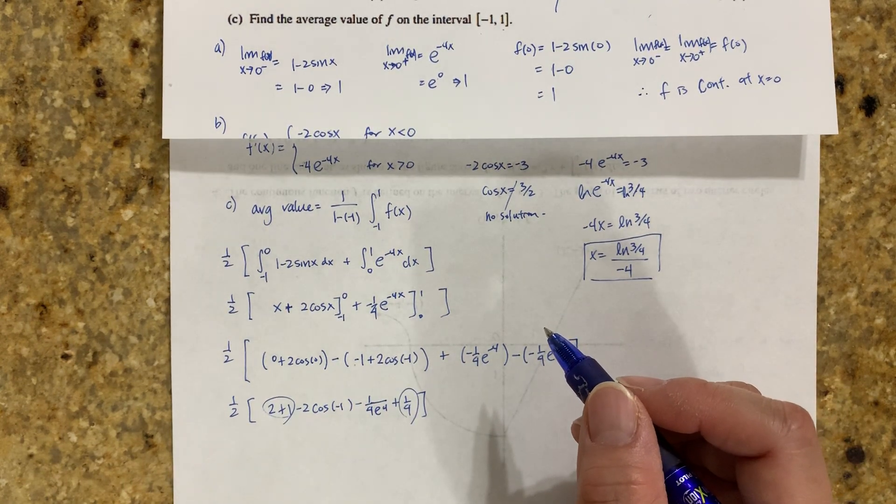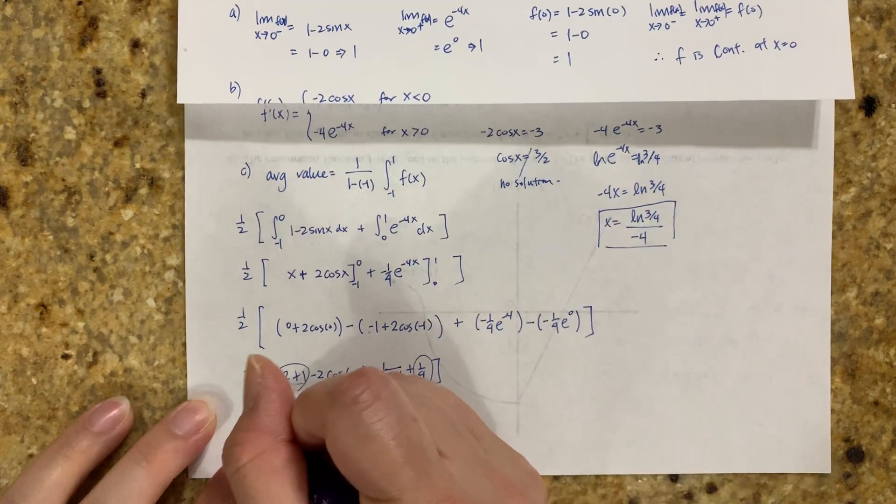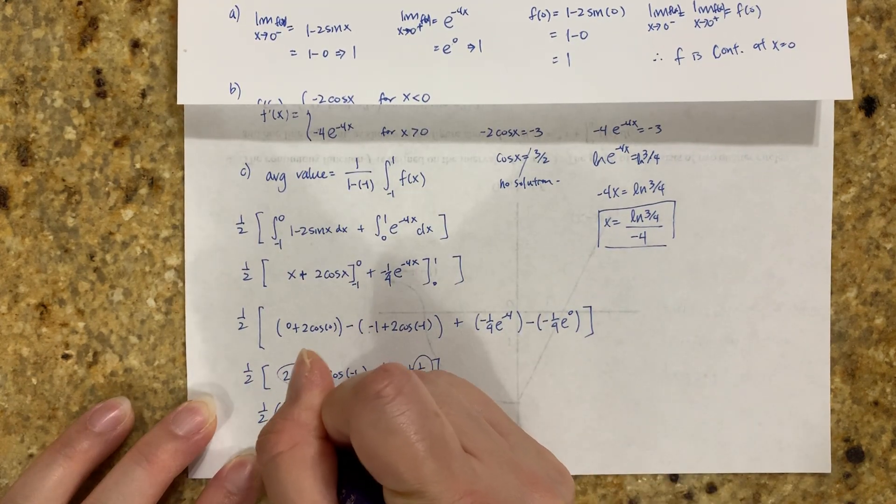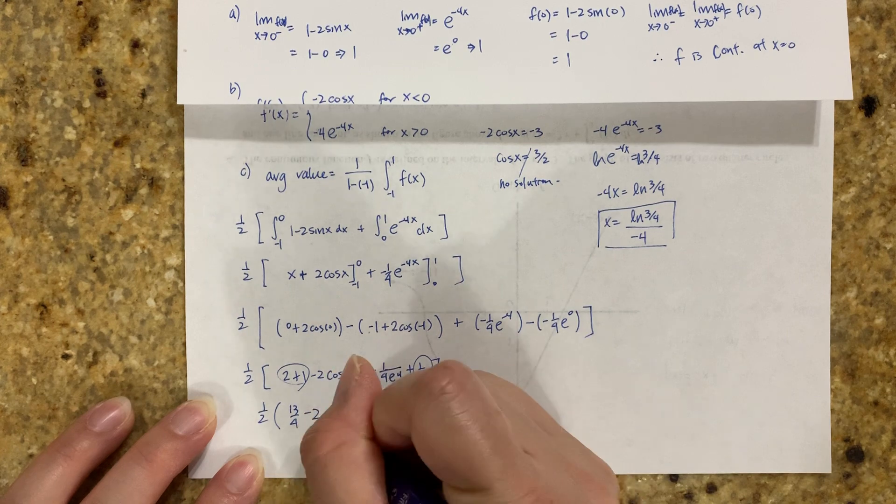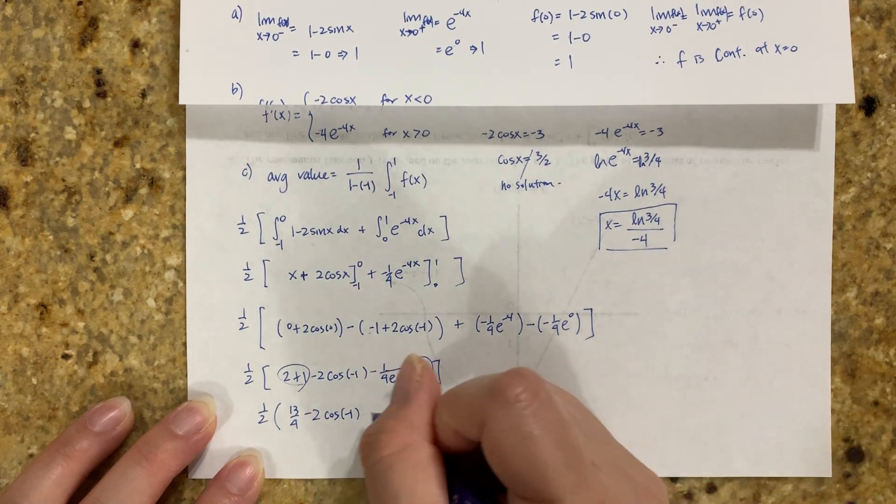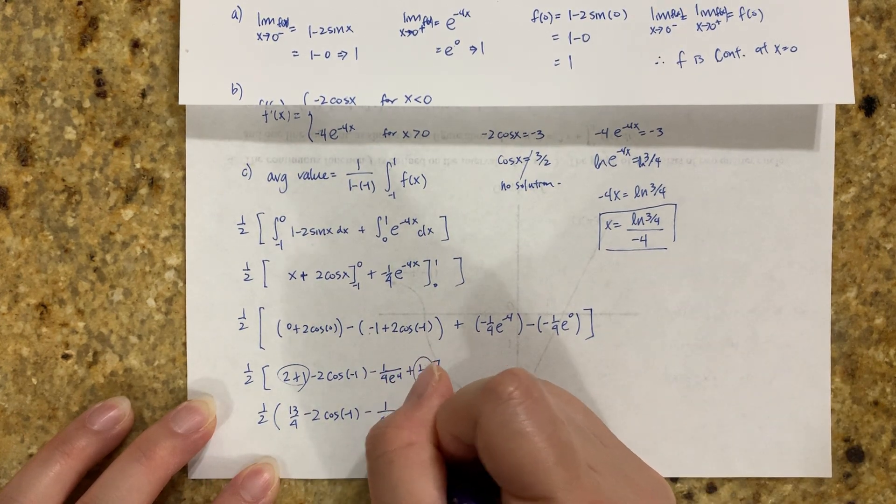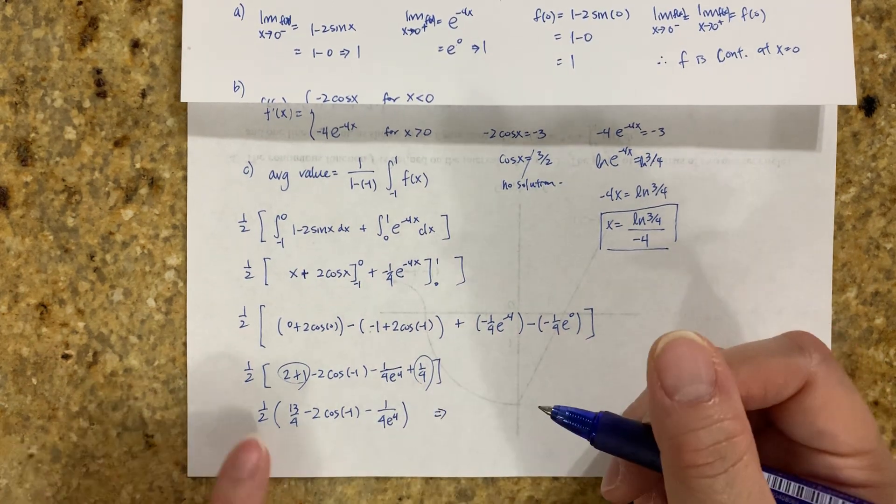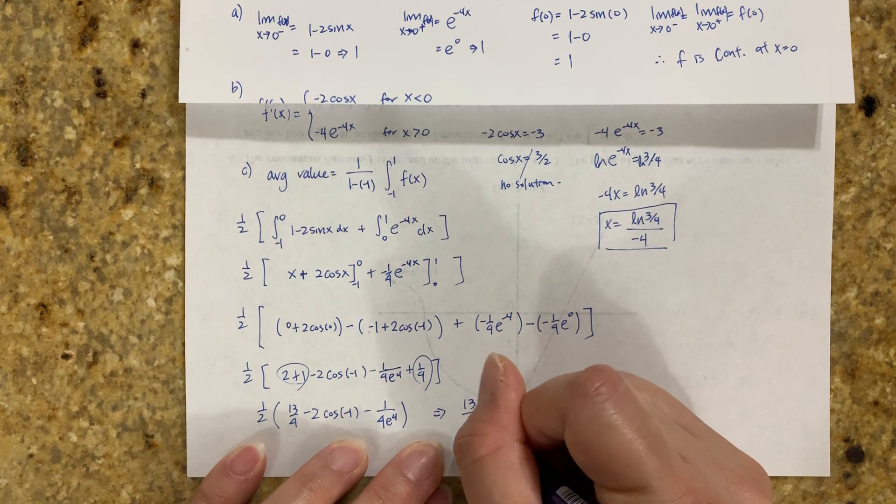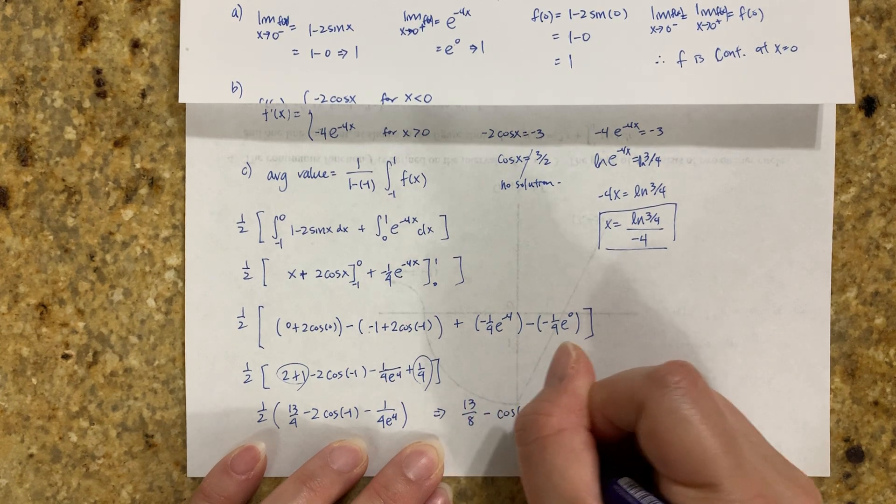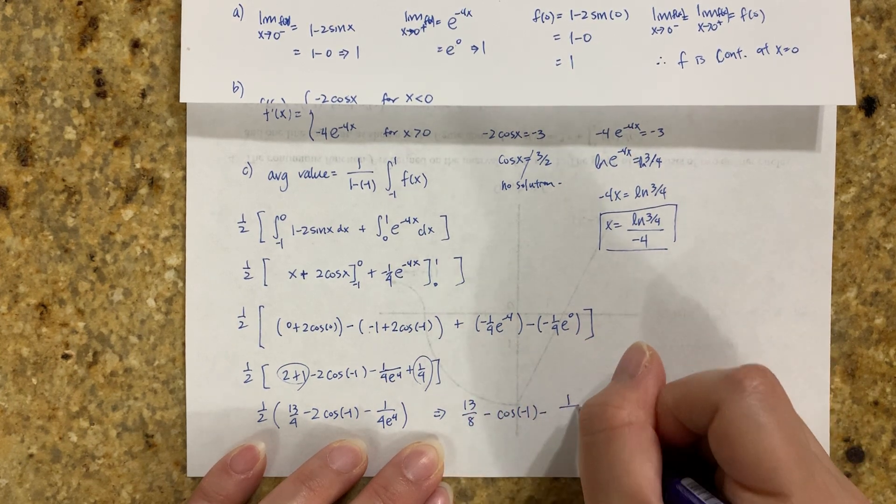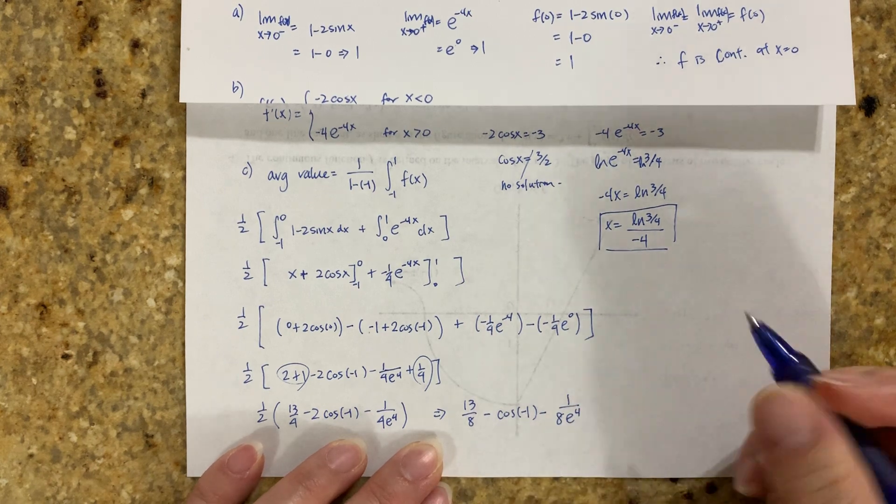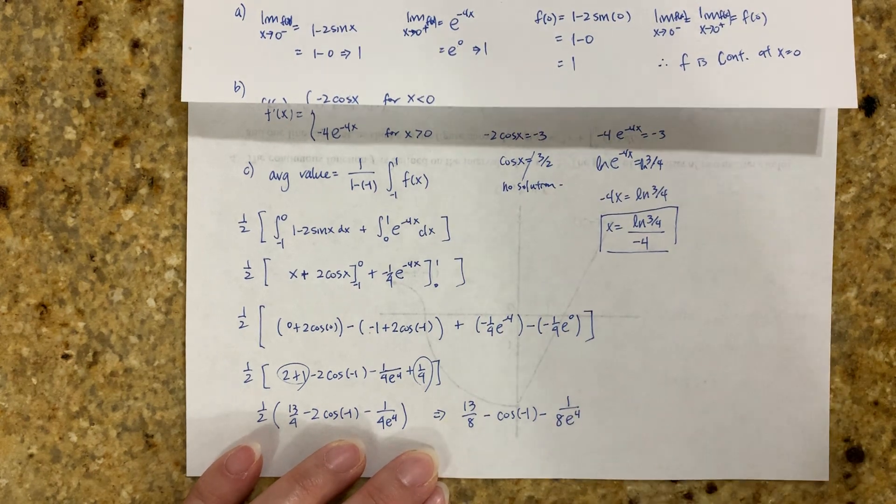Multiply by 1/2: 1/2 times [13/4 - 2cos(-1) - 1/4 times e^(-4)]. This simplifies to 13/8 - cos(-1) - 1/8 times e^(-4). That's your final answer.